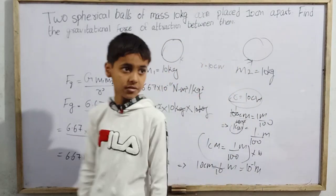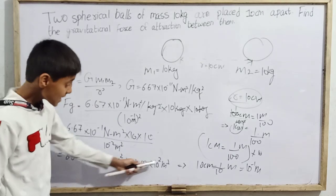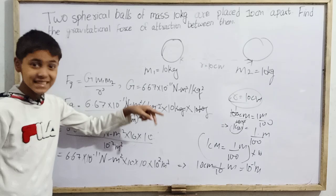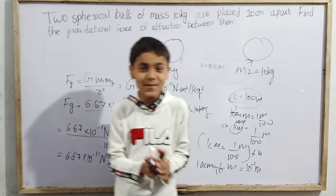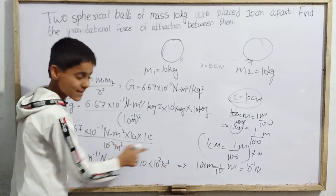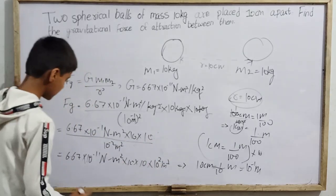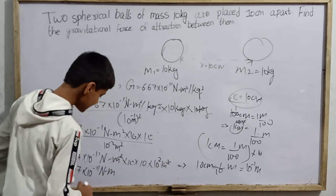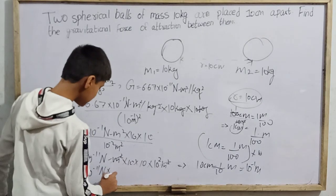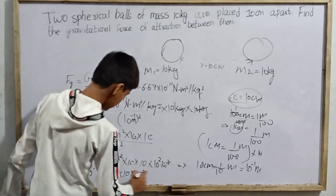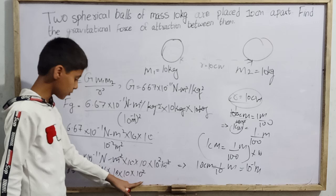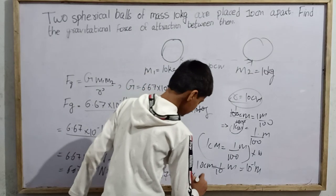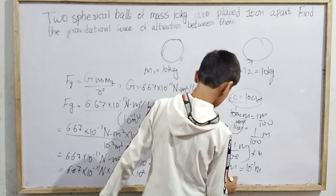We apply the same algebra to units as to numbers. The m² in the numerator from G and the m⁻² from bringing r² up cancel each other, leaving only newtons. The numerical part gives 10 × 10 = 10² = 100, and 100 × 10⁻¹¹ = 10² × 10⁻¹¹ = 10⁻⁹... wait — combined: 6.67 × 10⁻¹¹ × 10⁴ = 6.67 × 10⁻¹¹⁺⁴ = 6.67 × 10⁻⁷ N.